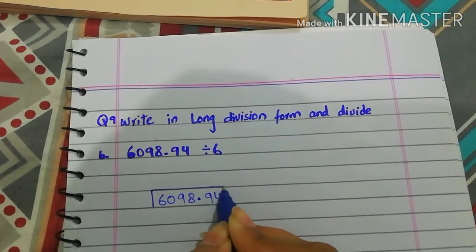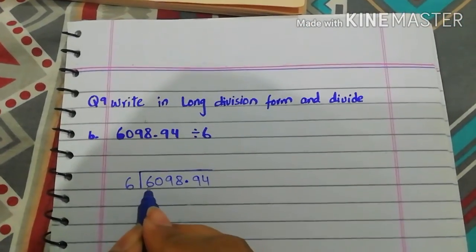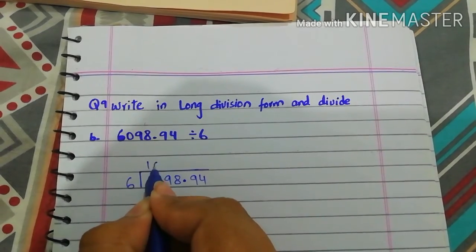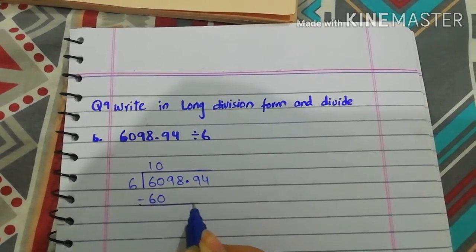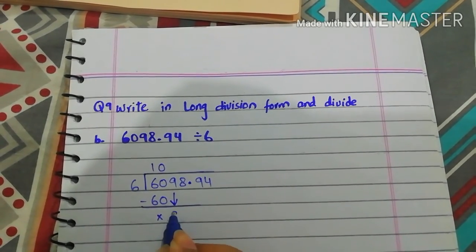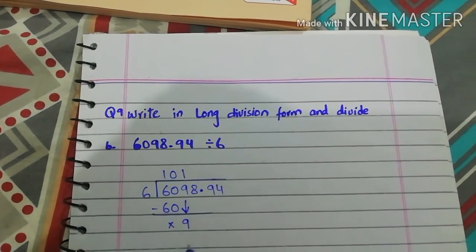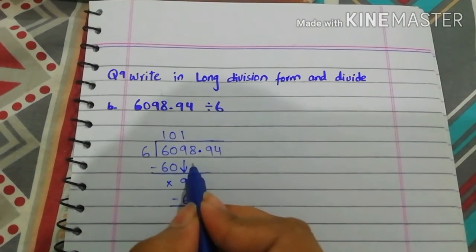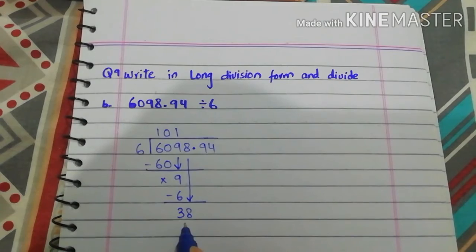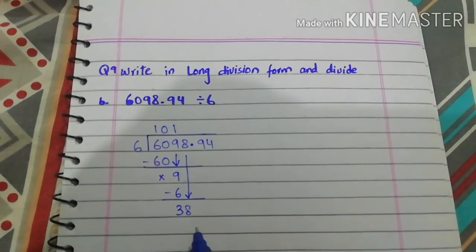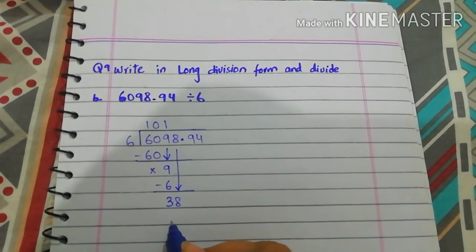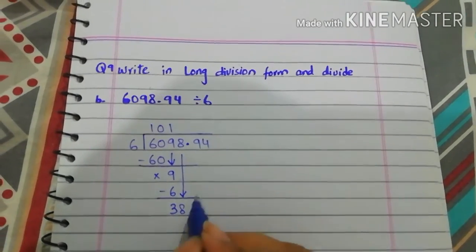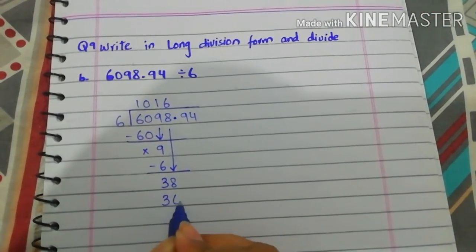6098.94 divided by 6. Compare the first digits: 60 is greater than 6. 6 tens are 60; 60 minus 60, remainder 0. Bring down the next digit, which is 9. 9 is greater than 6; 6 ones are 6; 9 minus 6, remainder 3. Bring down the next digit, which is 8, making 38. 38 is greater than 6; 6 sixes are 36; subtract: 38 minus 36, remainder 2.